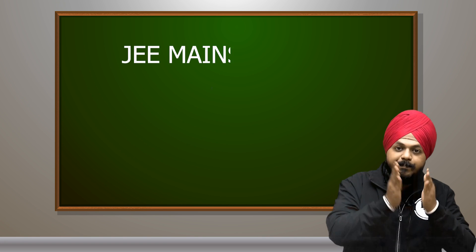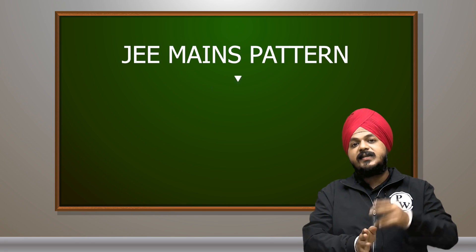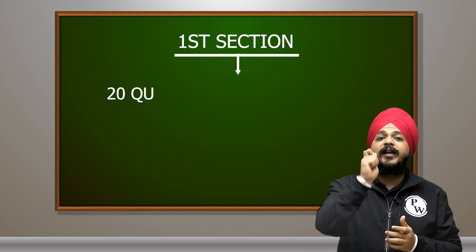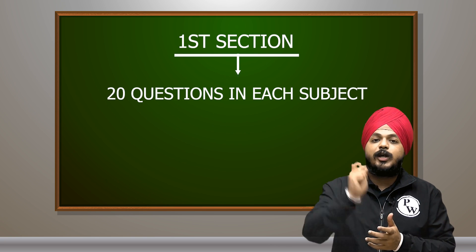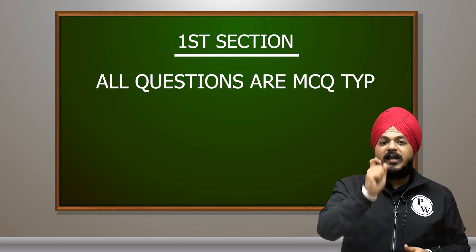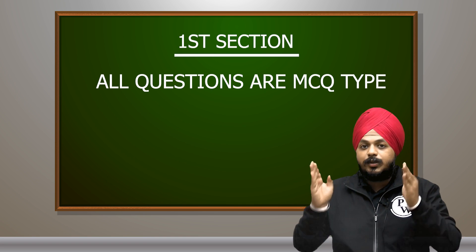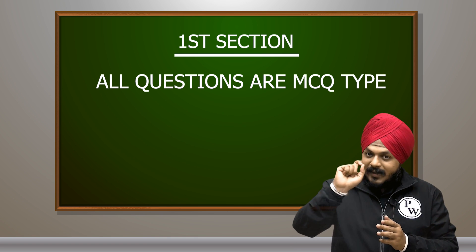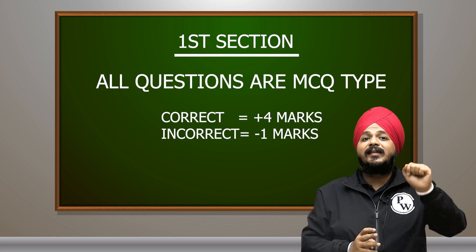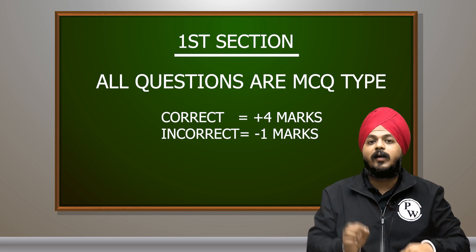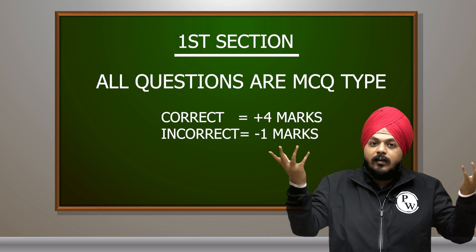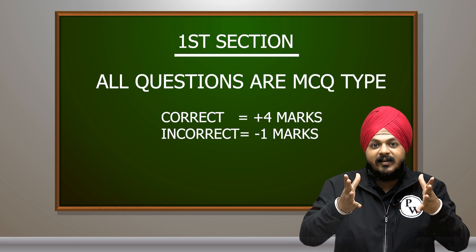Talking about the JEE Mains exam pattern, it has two sections. Section 1 has 20 questions in each subject — Physics, Chemistry, and Mathematics. All 20 questions are MCQ type. If you attempt correctly, you get plus four marks. If you attempt and get it wrong, there is a negative marking of one. If you leave the question, nothing changes.